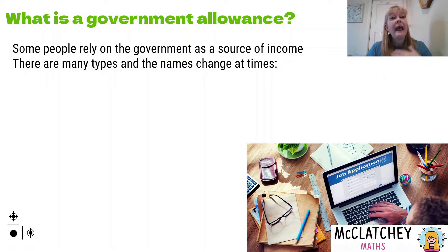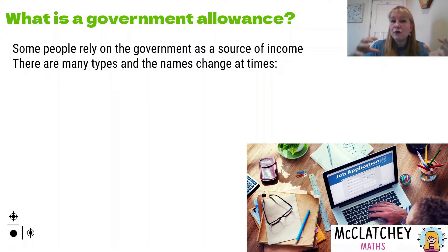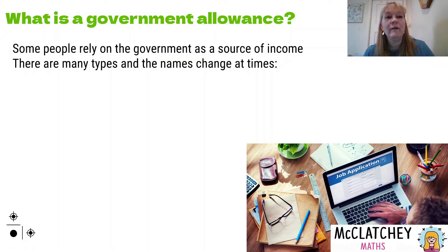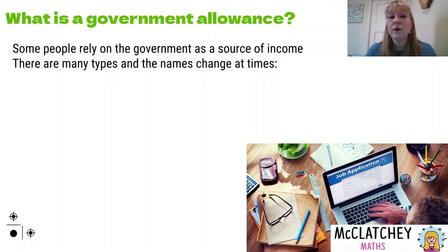So obviously, our government doesn't want Australians to be living in poverty. So what they do is they provide supplements or extras to their income so that they're able to live and survive. Now, we have quite a lot of people in our society who do rely on the government as a source of income or even their only source of income.